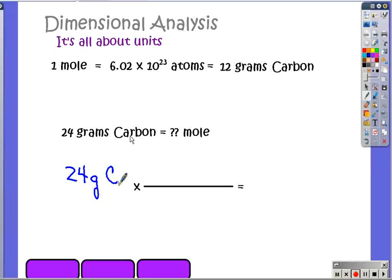Now what drives all of this dimensional analysis is the idea that we cancel out one unit and then we get the other unit that we're looking for. So the unit we want to cancel out is the unit of grams. I want to change this from grams to moles.